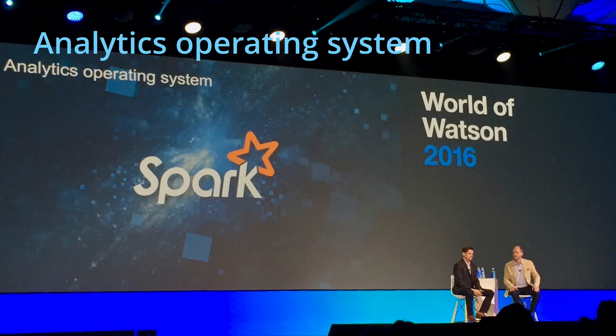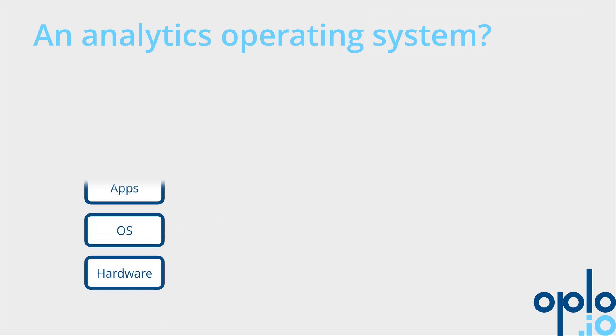And that's where Spark comes into the game. I like to borrow the vision of my friend Rob Thomas — on the left here. Rob is the general manager for data and AI at IBM, and his vision of Spark is that it is an analytics operating system. At first, to be honest, I was a bit troubled by this definition, but this is how I explain it. When you're building an application, you rely on your operating system, and your operating system relies on the hardware.